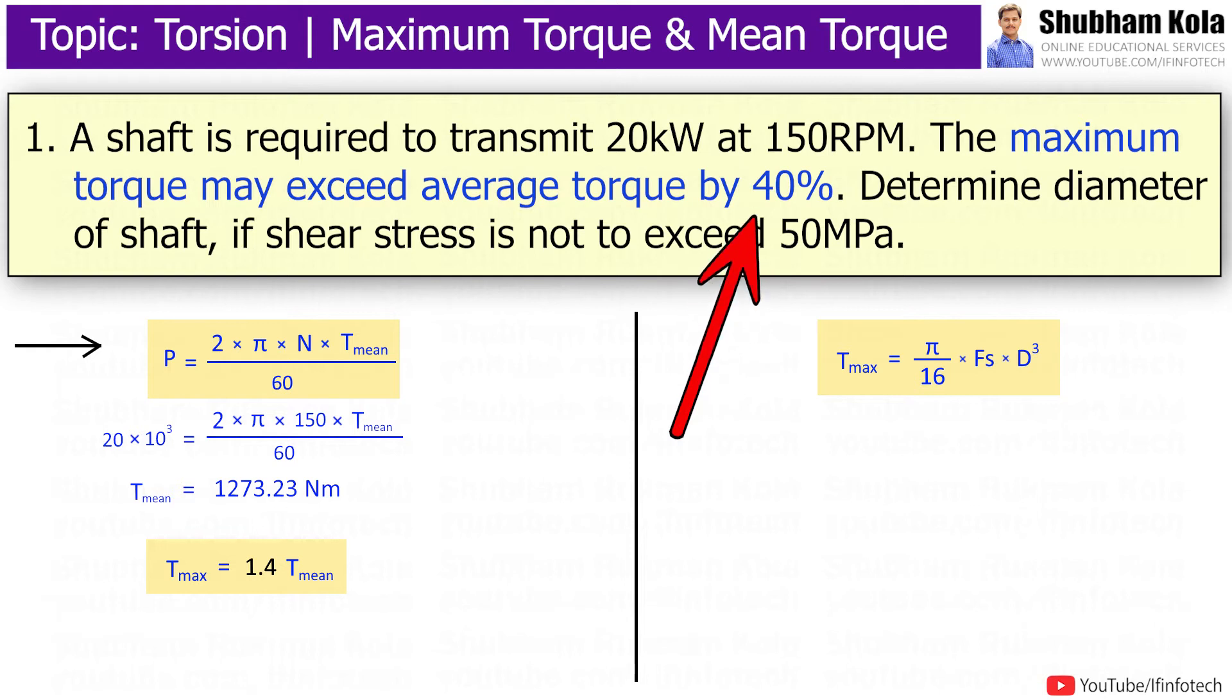Here in the problem, they have said that maximum torque may exceed average torque by 40%, that means maximum torque is 40% more than average torque or mean torque. Therefore, T_max = 1.4T_min. Therefore, the calculated value of T_max is 1782.53 Nm.